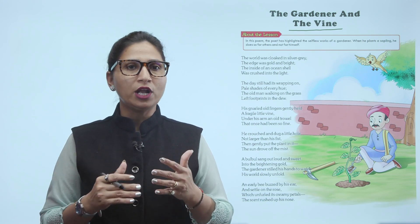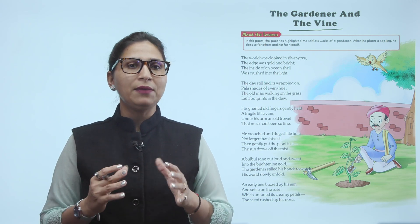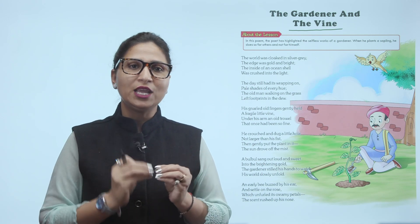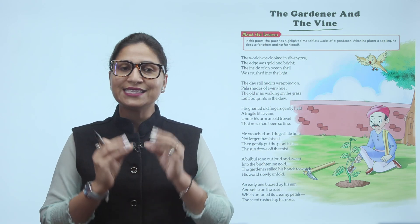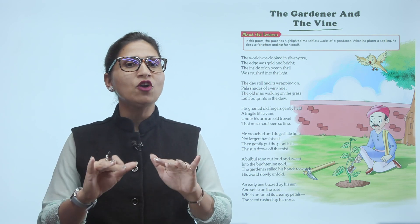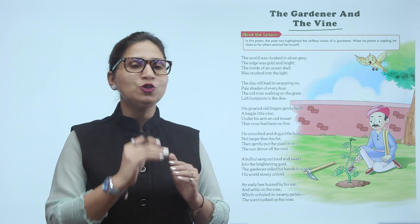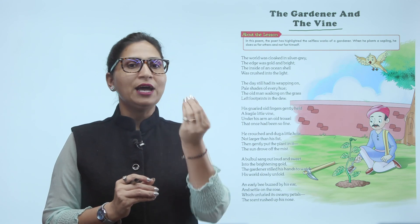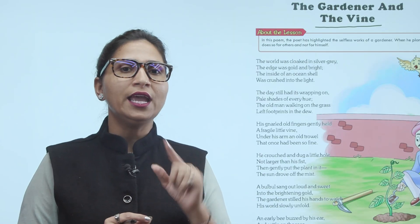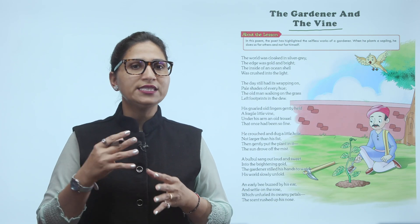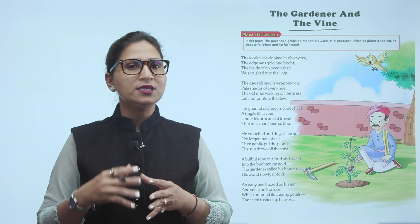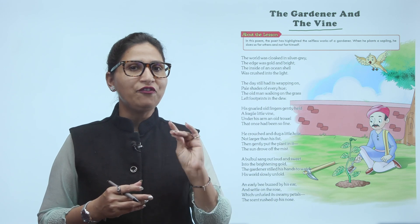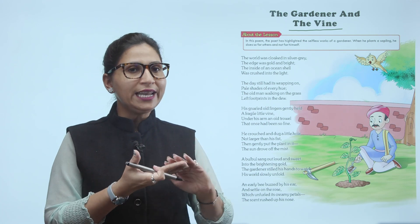Day — the day has its wrapping on. Pale shades of every hue — matlab uski shades kaise aa chuki hain, different different colors ki, means yellowish jo shade hai, woh aa chuki hai. Lekin dew — dew means kya hota hai? Water drops. Jo whole light ho.